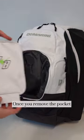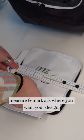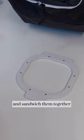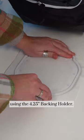Once you remove the pocket, measure and mark where you want your design. Then grab the bottom ring of the four and a quarter inch mighty hoop, lay tearaway stabilizer on it, and sandwich them together using the four and a quarter inch backing holder.